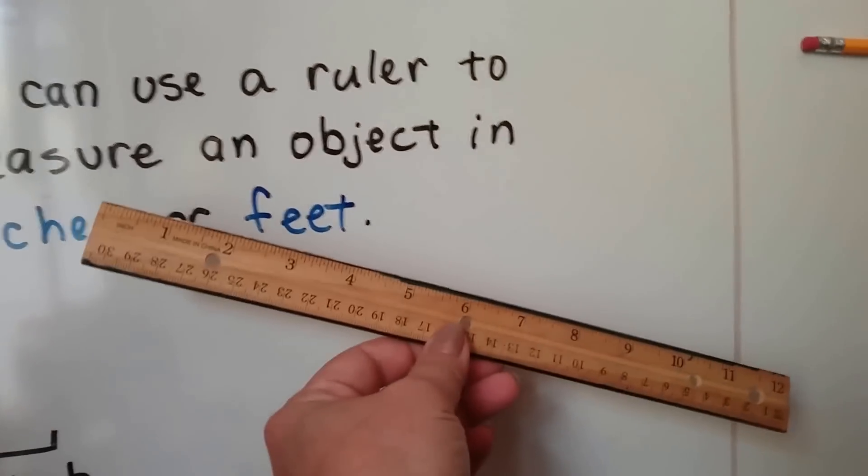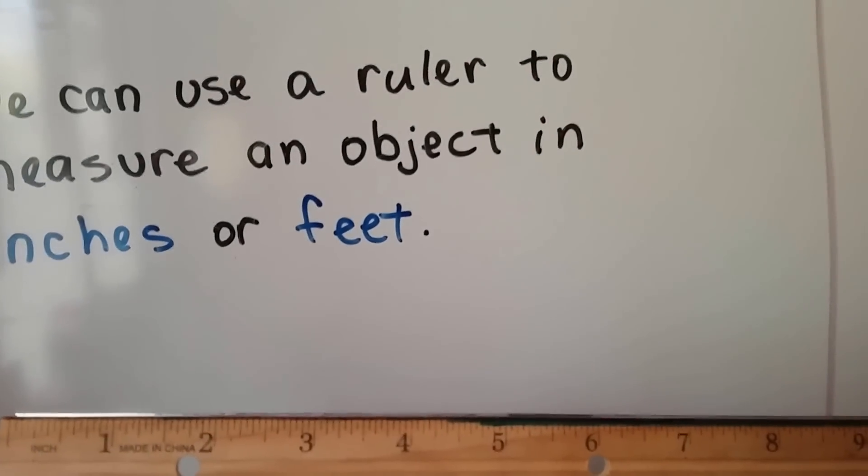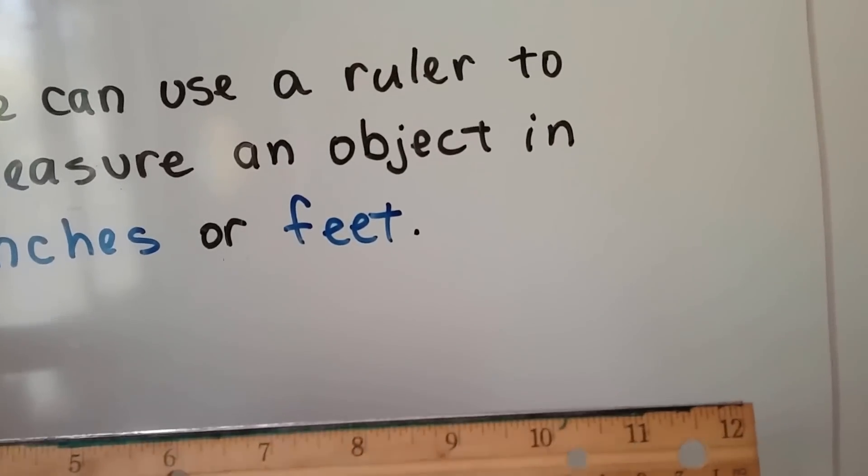So, this is a ruler. We can see across the top here, the numbers 1, 2, 3, 4, 5, 6, 7, 8, 9, 10, 11, 12.